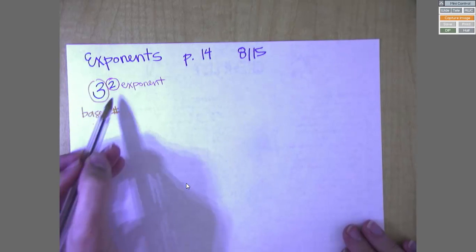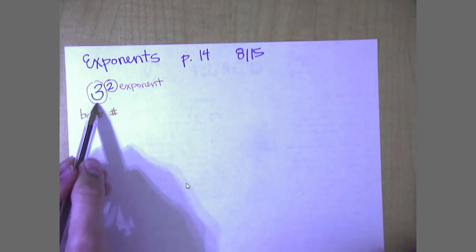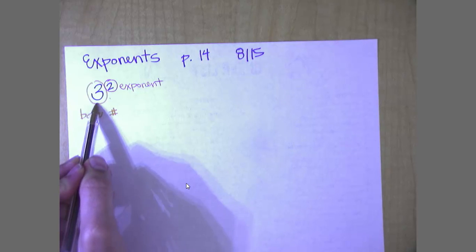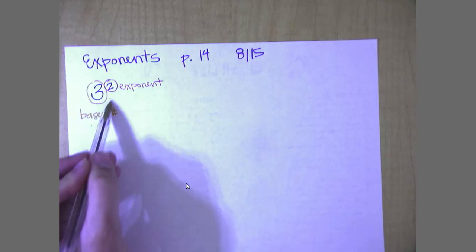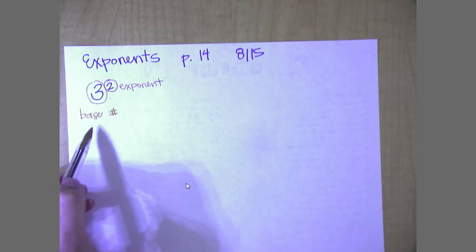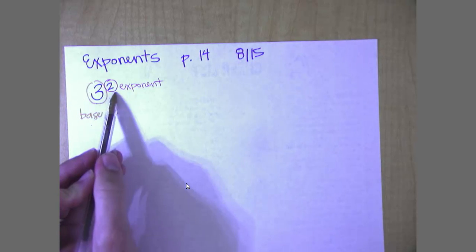Alright, so we've got our base number and our exponent. Sometimes this number might be bigger as far as a 9 versus a 6. Sometimes this one might be bigger as well. But our base number is going to be the larger sized number. The exponent is going to be the smaller sized number.